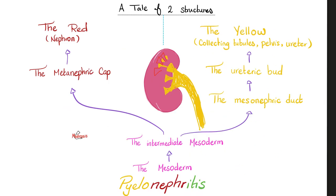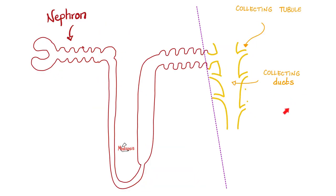Some pathology integration: what is pyelonephritis? Itis means inflammation. Pyelo refers to the pelvis — the sink or drainage of the kidney. Nephro is the nephron. So pyelonephritis is inflammation of essentially everything in the kidney — the pelvis and the nephron. That's why it's horrible, and that's why if you have pyelonephritis you will end up in the hospital. Both the red (metanephric cap) and yellow (mesonephric duct) parts are mesodermal.